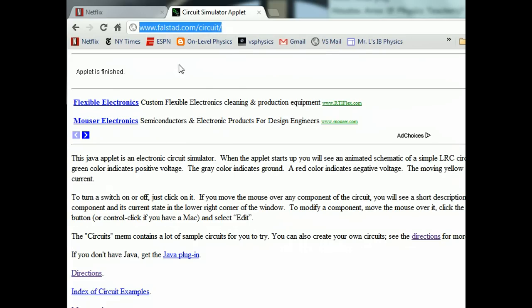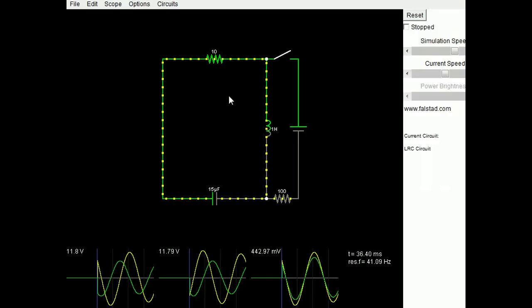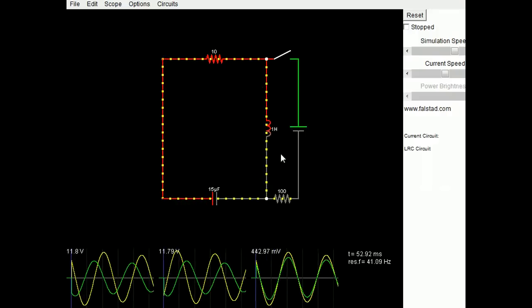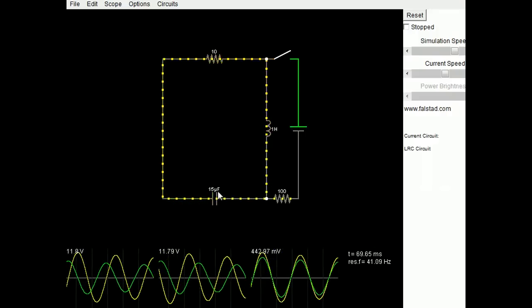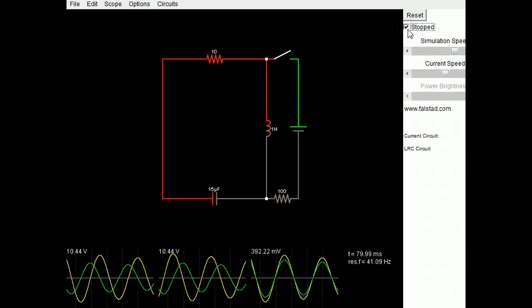I'll just refresh my screen. This applet window will start automatically. You'll get this default circuit that starts oscillating. It's an RLC circuit. We can get rid of that or just click on stopped.